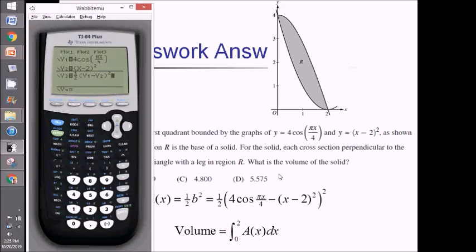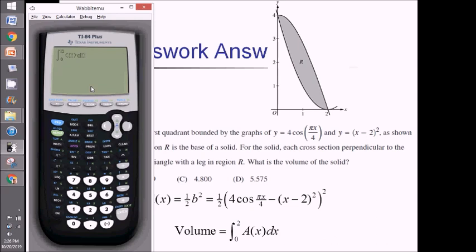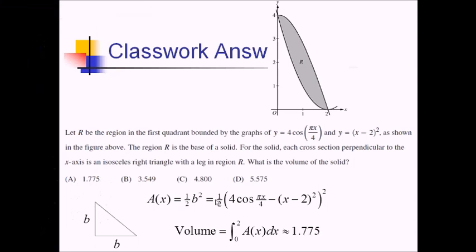On this problem, inside the parentheses there's a lot going on. To avoid careless mistakes, I'm going to split this up in the calculator. In y1 I'll put my cosine function, y2 the other one, and y3 will be the actual area formula: 1 half times the first function minus the second function, squared. Doing math 9, integral from 0 to 2, then alpha trace y3 and dx gives an answer of 1.775, which matches answer choice A.